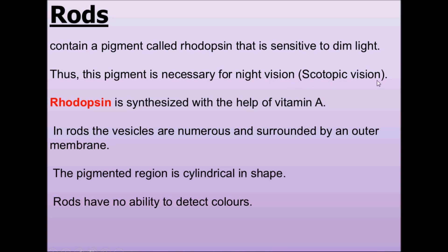This pigment is necessary for night vision, which is known as scotopic vision. Dim light or twilight vision is called scotopic vision, whereas daylight vision is known as photopic vision. Rods are the cells responsible for dim vision, and rhodopsin is synthesized with the help of vitamin A — it is a vitamin A derivative.